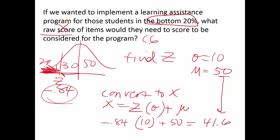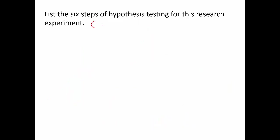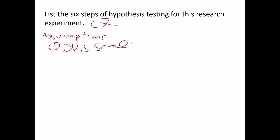Moving on to chapter seven — hypothesis testing. With hypothesis testing we're talking about the whole sample, everybody. Step one is to write down the assumptions. The first assumption is always that the DV is scale. This is a memory experiment measuring how many items are remembered, which is ratio-level, so yes — the DV is scale.